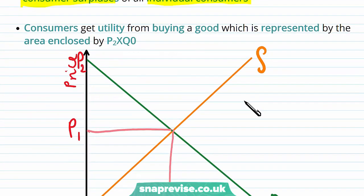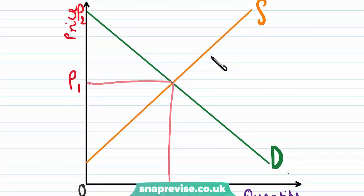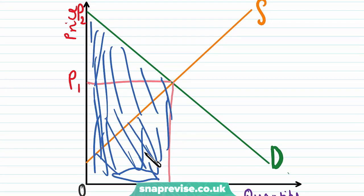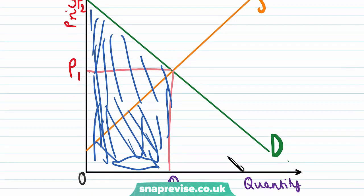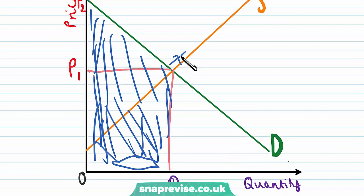So consumers get a utility from buying a good, and that utility is represented by this area enclosed. So the area that I'm talking about is this area here, all of this blue area. So P1, P2 all the way down to 0 to our quantity here up to this point I shall call X. So all of this area is the utility that is gained by a consumer, and you'll notice it's the entire area underneath the demand curve up to the equilibrium quantity.